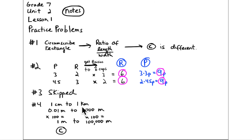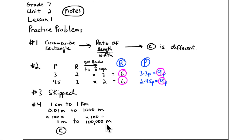Problem 4 asks which choice is equivalent to 1 centimeter to 1 kilometer. Convert both to meters: 1 centimeter is 1/100 of a meter, and 1 kilometer is 1,000 meters. Multiply both by 100 to clear the fraction: 1/100 × 100 = 1 meter, and 1,000 × 100 = 100,000 meters. So the equivalent ratio is 1 to 100,000, which is answer C.